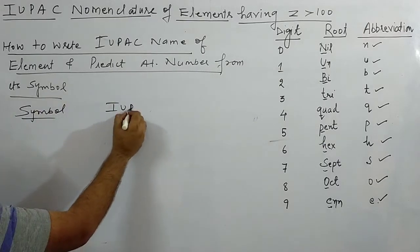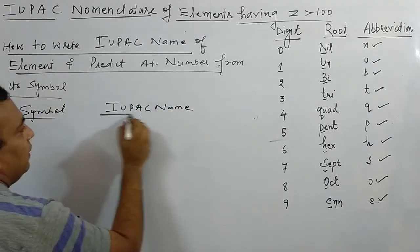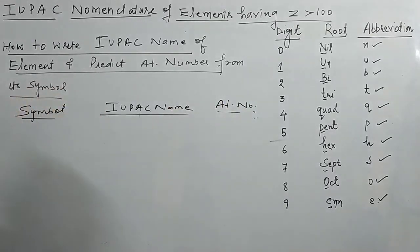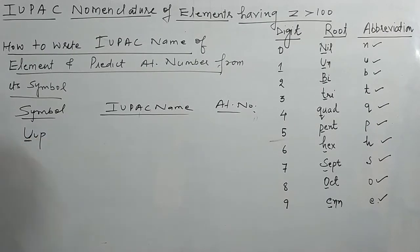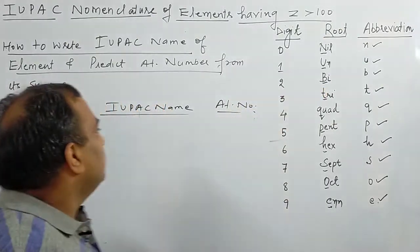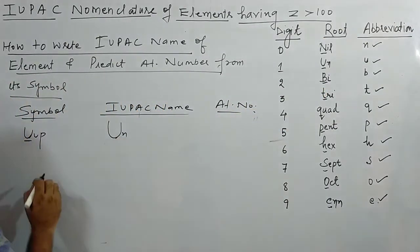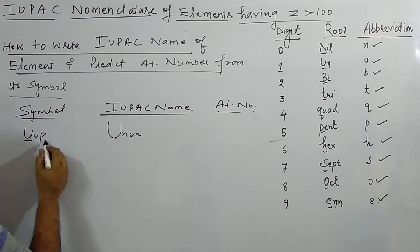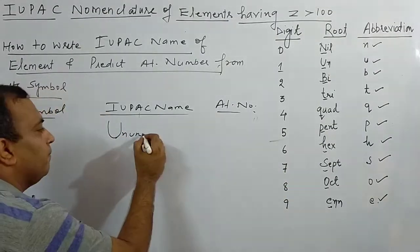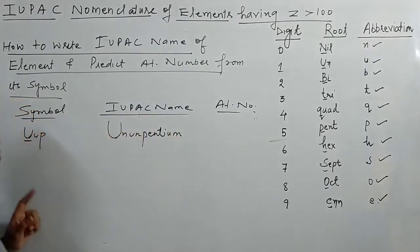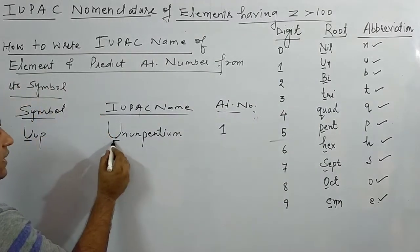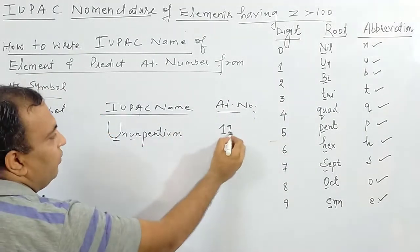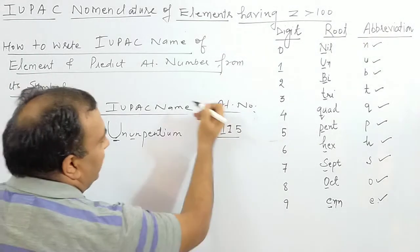First reverse example: symbol UUP. U stands for un, again U stands for un, P stands for pent. So the IUPAC name is Ununpentium. For atomic number: un → 1, un → 1, pent → 5. So atomic number is 115.